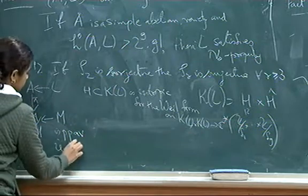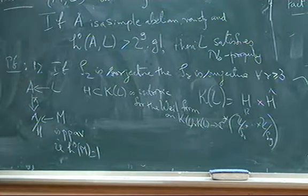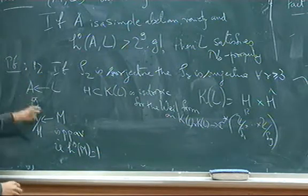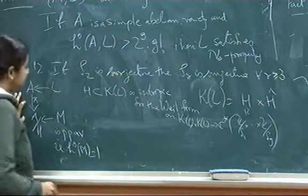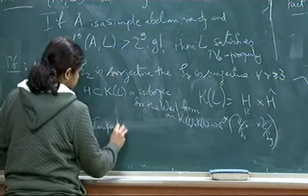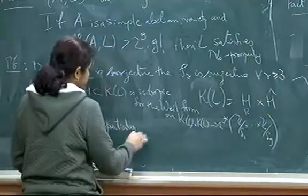That means H^0 of M is 1 and so you have this. In particular actually we can just, so this is an isogeny and so in particular, using projection formula.